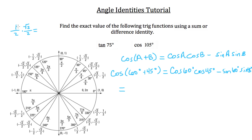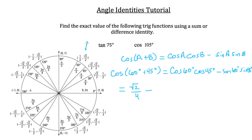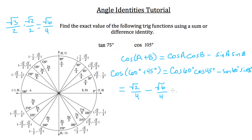Everything on the right gives us the exact value of cosine 105 degrees. Cosine 60 degrees is the x-coordinate at 60°, which is 1/2. Times cosine 45, which is root 2 over 2. Multiplying gives root 2 over 4. Now subtract sine 60 times sine 45: sine 60 is root 3 over 2, times root 2 over 2 equals root 6 over 4. Both fractions share denominator 4, so the result is (root 2 minus root 6) over 4. The cosine of 105 degrees as an exact value is (root 2 minus root 6) over 4.